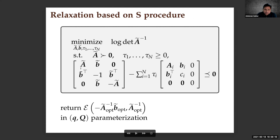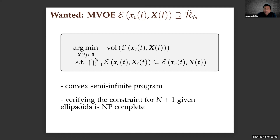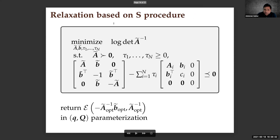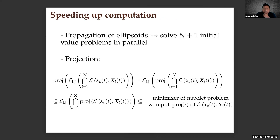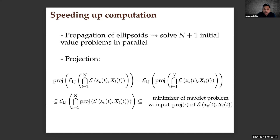Even without the anytime idea, there are two computationally attractive features. First, propagating the N+1 ellipsoids — solving N+1 initial value problems — can be run in parallel. Second, in applications we are often interested in the ellipsoidal over-approximation of the reachable set projected onto a subset of states. For instance, in collision avoidance for drones or autonomous driving, we may only care about position coordinates.